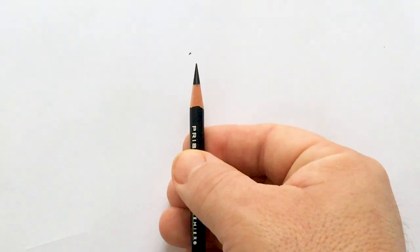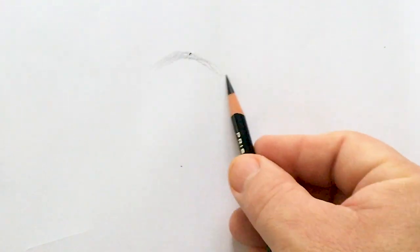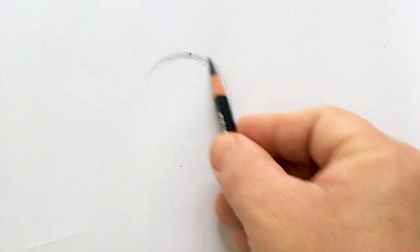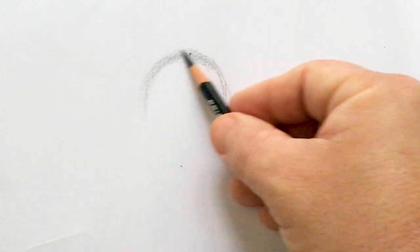All right, cartoonist. Step number one. In the middle of that big old blank piece of paper, lightly sketching a circle that's about as big as an orange. Now I got some tips. First, keep it light. And here's the big one. You're not writing.